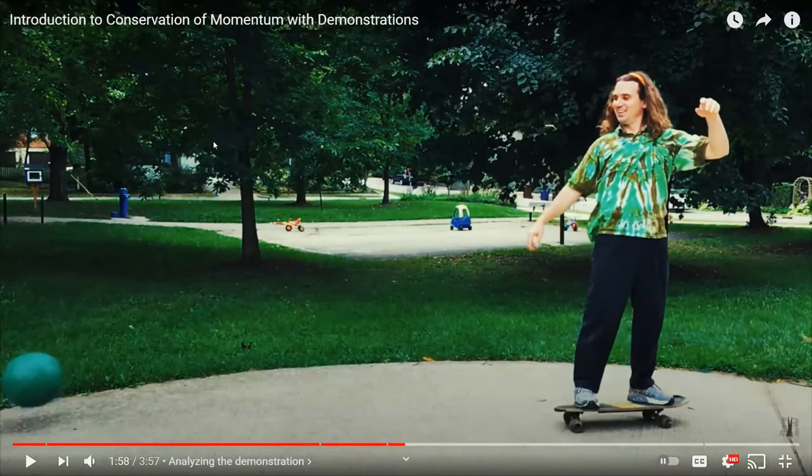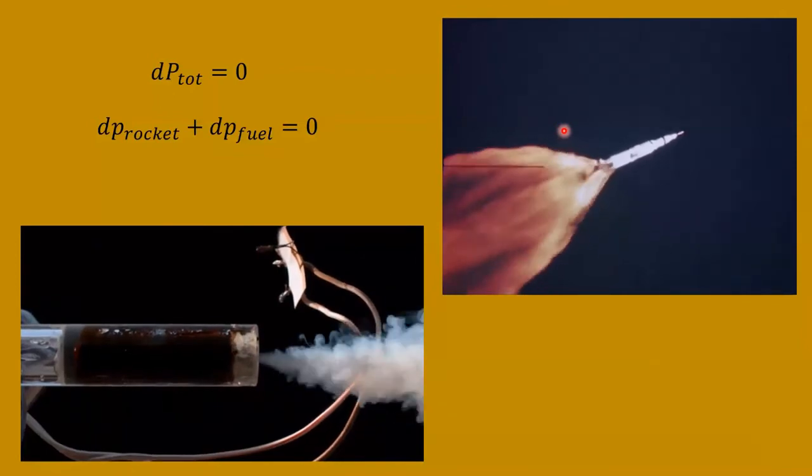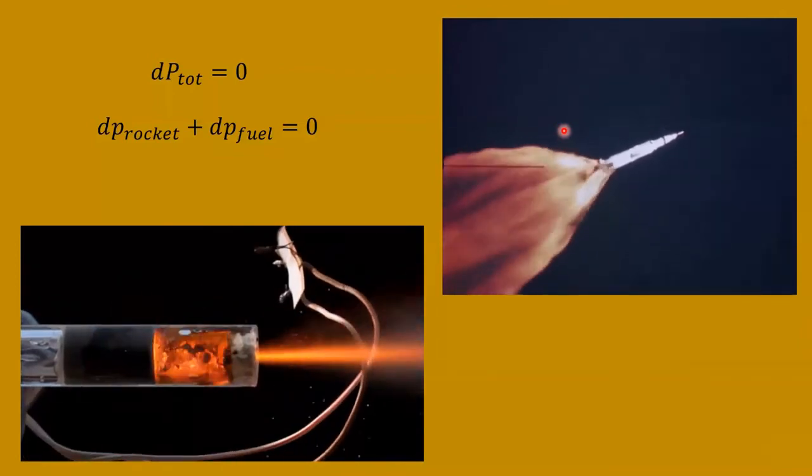So when he throws the ball to the left, he endows the ball with what you might call negative momentum. If we think of to the right as the positive direction, the ball acquires negative momentum. So in order to conserve the momentum of the system, he and the skateboard have to acquire a positive momentum to the right. That way, when you sum up the momentums of the ball and he and the skateboard, you still get zero.